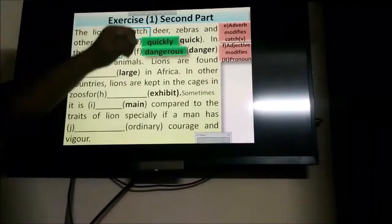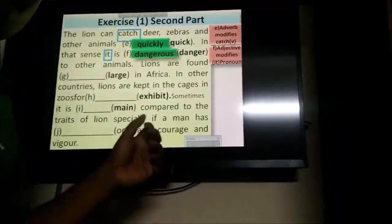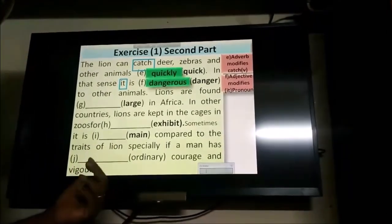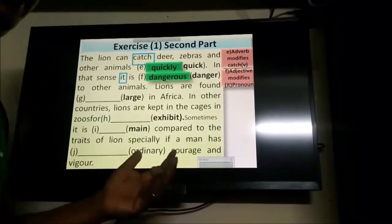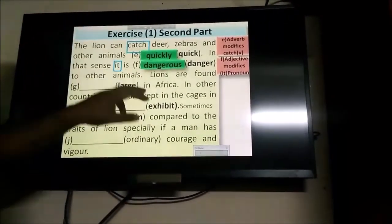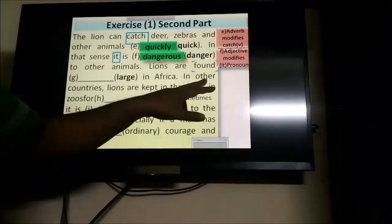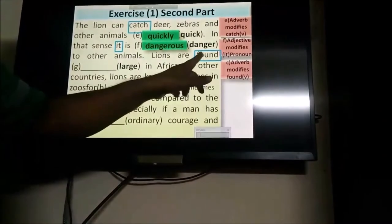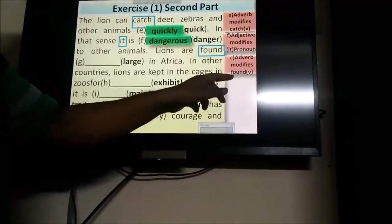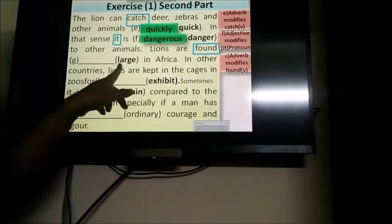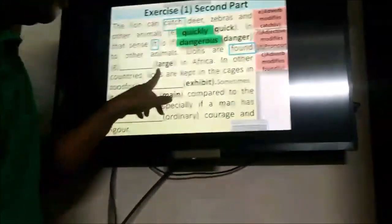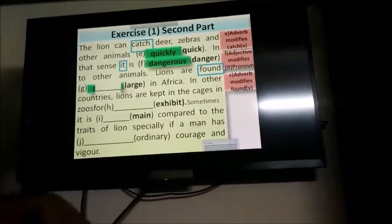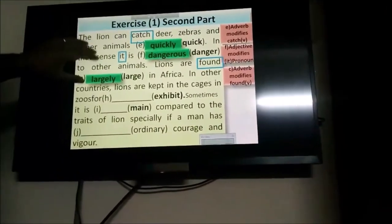Lions are found large in Africa. Large is given here as an adjective. You need to turn this word into an adverb. So, L-Y will be added. You know that adverb modifies found here because it's a verb. So, when you turn this large into an adverb, your answer will be largely.